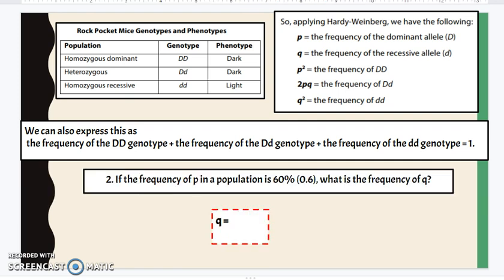Now if we look at our next question, if the frequency of P in a population is 0.6, what is the frequency of Q? Well, because P plus Q equals 1, our answer here would be 0.4.